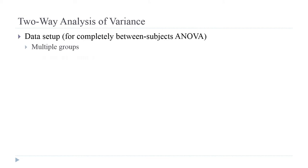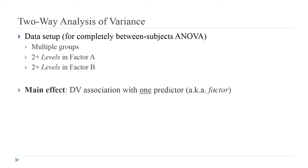Our data setup is that we have multiple groups — two or more levels in factor A, two or more levels in factor B. When you get to factorial analysis of variance and you're comparing means, there's not a factorial t-test. So it's ANOVA all the way. You need two levels or more in factor A and two levels or more in factor B to have the setup for a factorial analysis of variance.